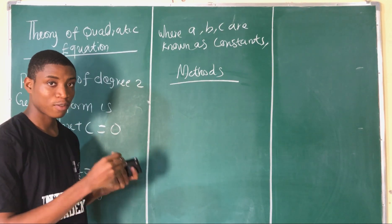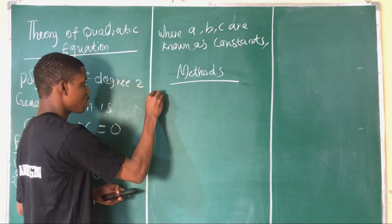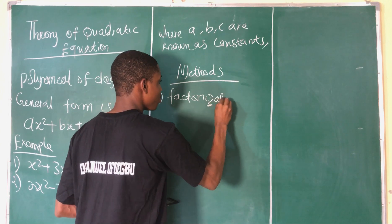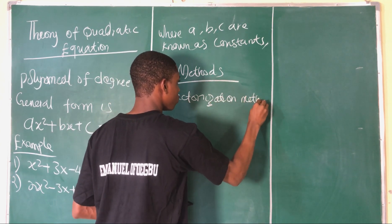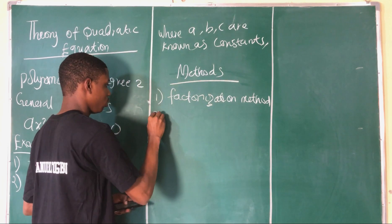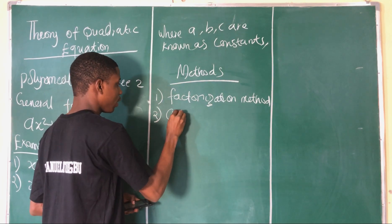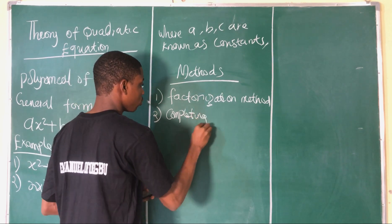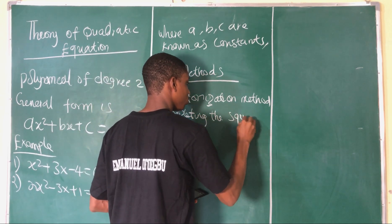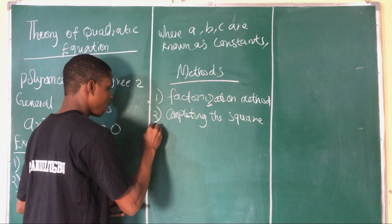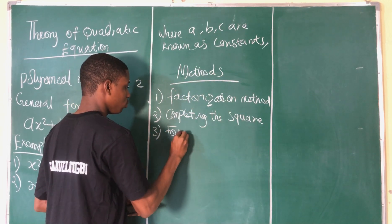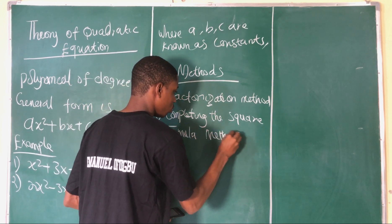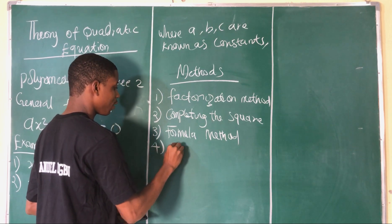There are four methods we are going to cover in this theory of quadratic equations. The first is the factorization method. The second is the completing the square method. The third is the formula method. And the fourth is the graphical method.